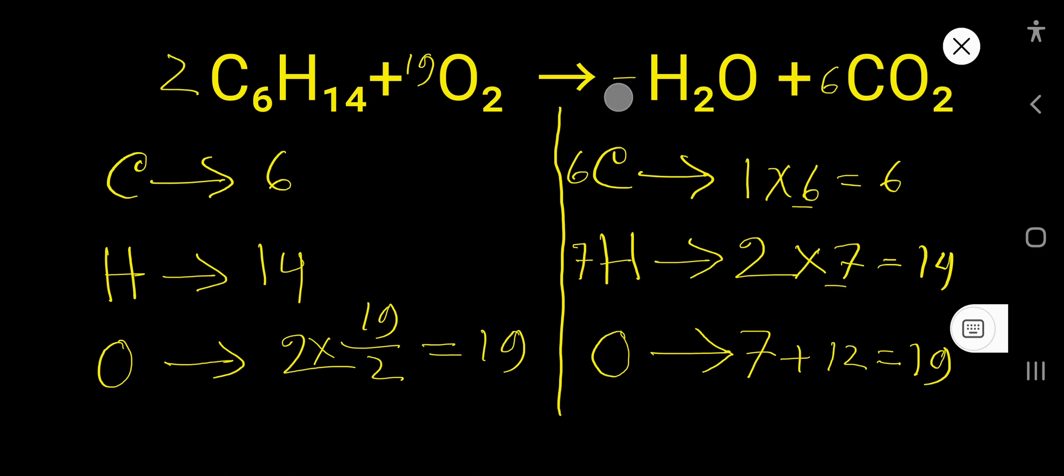7 times 2 gives you 14. Right. Then 2 times 6 equals 12. So this is the balanced chemical equation.